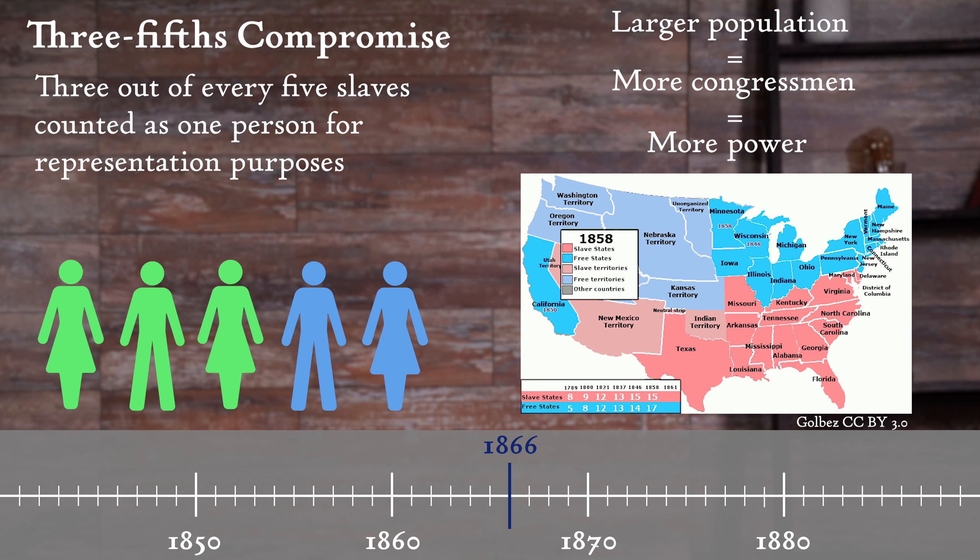Slaveholders wanted slaves to be considered a full person in the population census because then their states would have more congressmen, which meant more power over the North. The abolitionists opposed slaves being counted as a full person because it would later be impossible to make laws against slavery, since Southern states would control the House of Representatives. Therefore, it was a compromise at Three-Fifths. This compromise was repealed by the Fourteenth Amendment, although the Thirteenth Amendment had already banned slavery. After the 1870 census, all free persons would count towards determining the number of representatives a state sent to the House. Radical Republicans were afraid that this increased representation of Southern states would be used against newly freed Blacks.